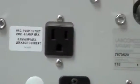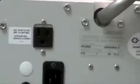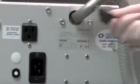Next, plug the vacuum pump's power cord into the receptacle located on the back of the freeze-dryer.